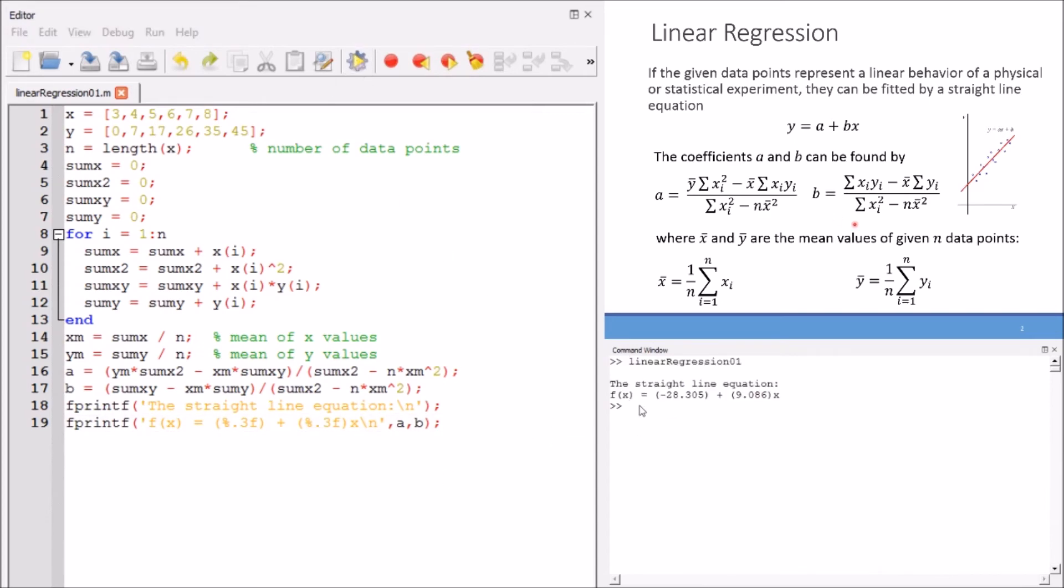Now, we have the answer. The straight line equation f of x equals to minus 28.305 plus 9.086 x. This is the equation of the straight line using the simple for loop.